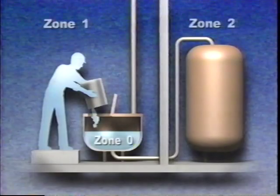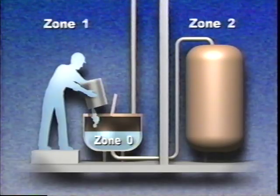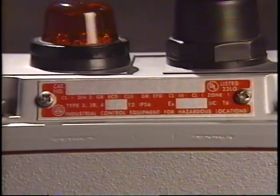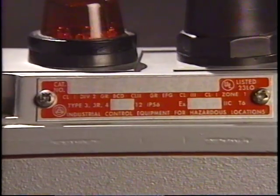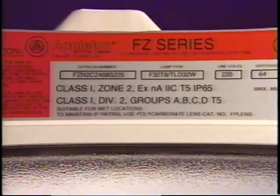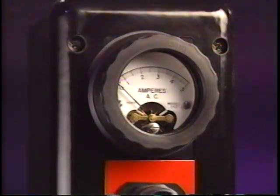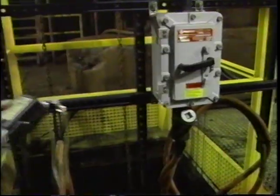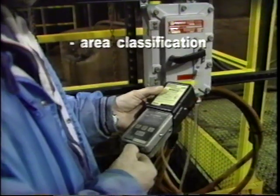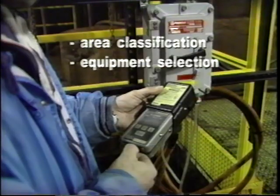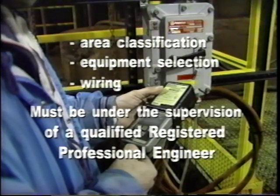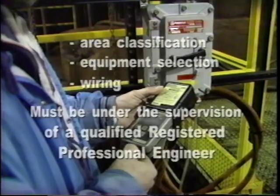New in Article 505 of the 1996 NEC is the option of using the International Electrotechnical Commission, or IEC, Zone Classification System. The zone system classifies equipment according to the type of protection it offers. Equipment approved for use in a zone may be used in a Class 1 area, providing the designer with another option for specifying equipment. When the zone system is used, area classification, equipment selection, and wiring must be under the supervision of a qualified registered professional engineer.